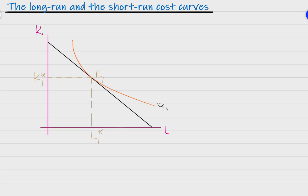In the previous video we analyzed a firm's cost minimization problem, where a firm tries to maximize its output subject to the cost constraint. As seen in the graph, the ISO cost line is tangent to the isoquant curve at the point of equilibrium, and the firm hires L1-star of labor and K1-star units of capital. Now we extend our analysis to see the relationship between the long-run and short-run cost curves of a competitive firm.